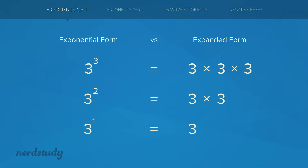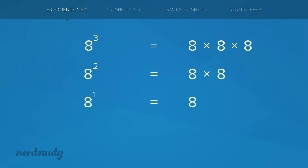And this works for any number, not just 3. Take 8 for example: 8 to the exponent 2 equals 8 times 8. If you divide both sides by 8, you get 8 to the exponent 1 on the left side and 8 on the right side. Now, instead of stopping there, why don't we try dividing both sides by 8 one more time? We have 8 to the exponent 1 divided by 8 to the exponent 1. Using the quotient rule, we subtract the exponents: 8 to the exponent 1 minus 1, which equals 8 to the exponent 0. This is the first time we ever see an exponent of 0.